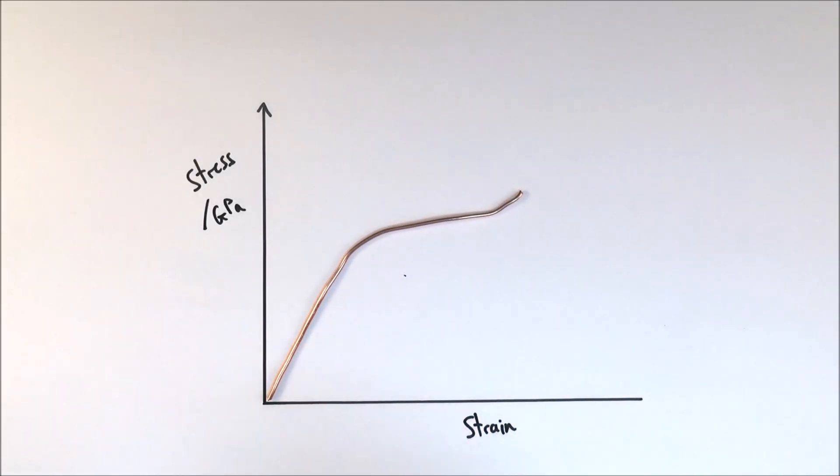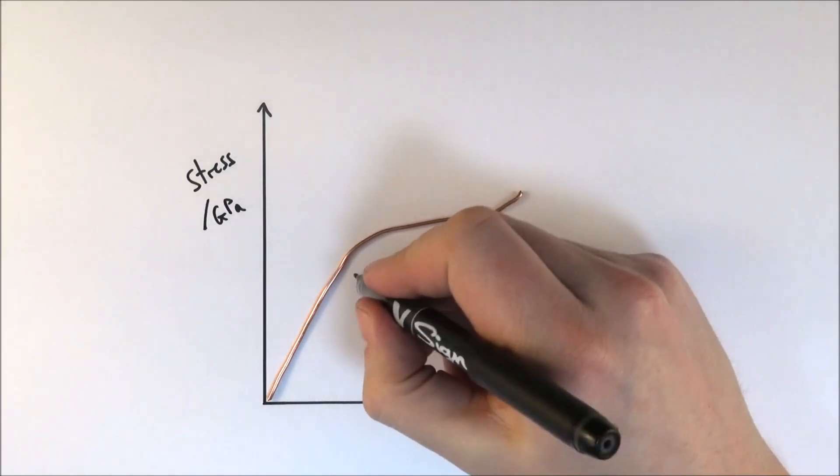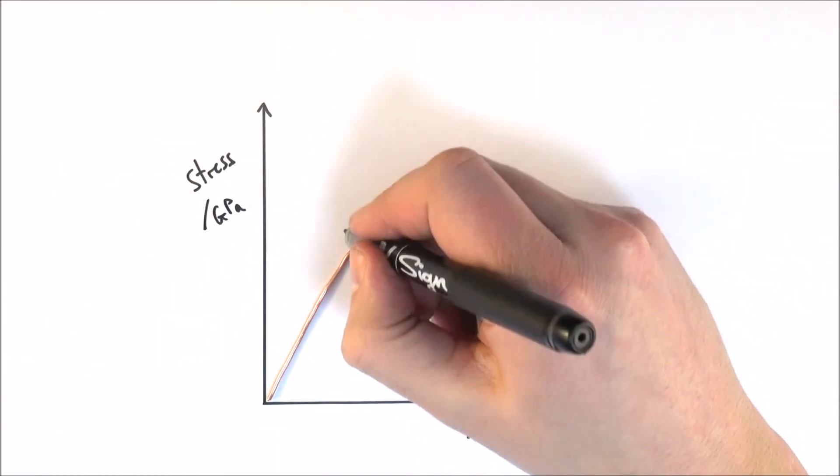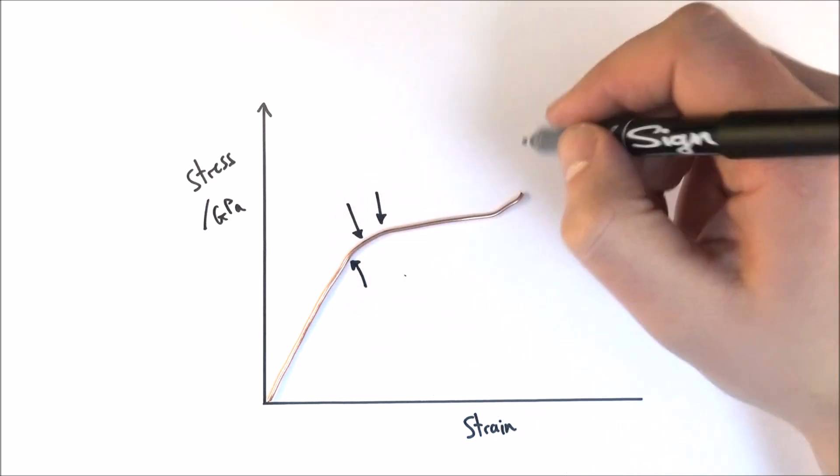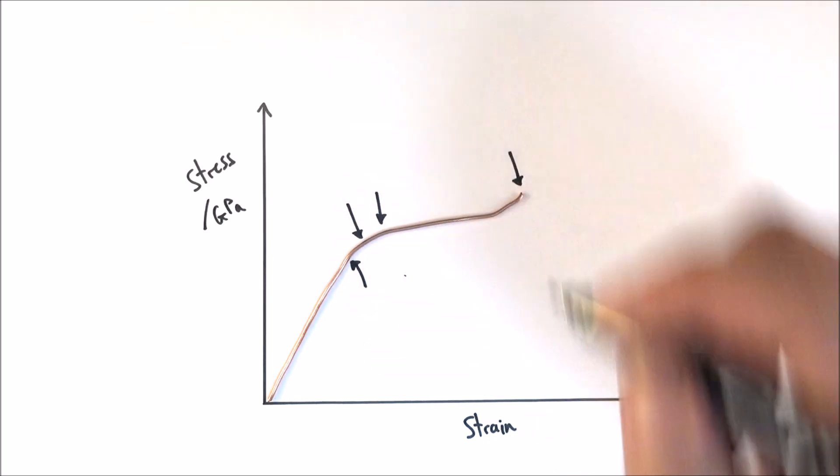Now there are really four key points on the graph I'd like you to think about. There's a point here, there's a point about here, a point up here, and also this one at the very end.